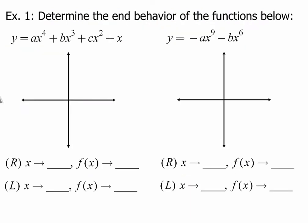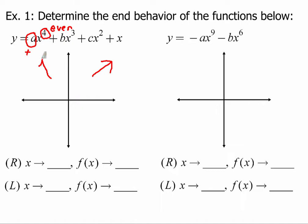We can use that to answer questions. Determine the end behavior of y equals ax to the fourth plus bx cubed plus cx plus x. The leading coefficient is positive, and the degree is even. Positive tells me the right side points up, and even tells me they point in the same direction. So I don't even need to know what the function looks like between the ends to determine end behavior.